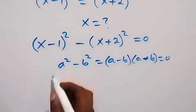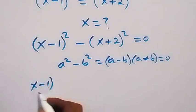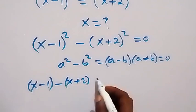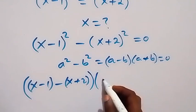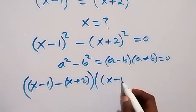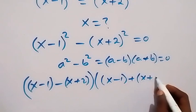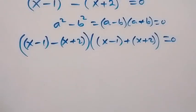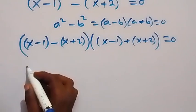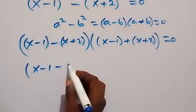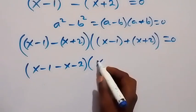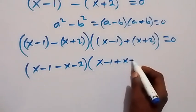Now this becomes (x-1) minus (x+2) in the form of a minus b, then multiply by - open bracket - that will be a plus b: (x-1) plus (x+2), close bracket, which is equal to 0. When we solve these brackets, we open with minus and then we have x minus 1 minus x minus 2, close bracket. When you open this with plus, same thing: x minus 1 plus x plus 2.